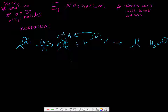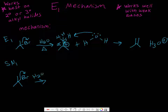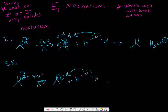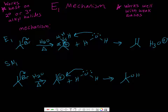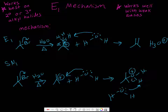Remember, E1 and SN1 are always in competition, so we also have to show the SN1 product. Our leaving group leaves to give the carbocation again. Our weak nucleophile, water, attacks that carbocation. The oxygen doesn't like the positive charge, so another water molecule will come and take one of those protons, pushing those electrons back onto the oxygen.